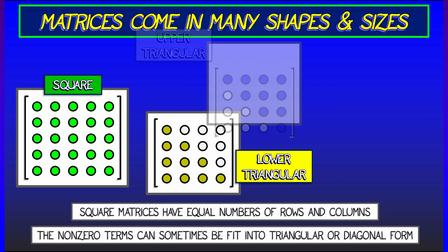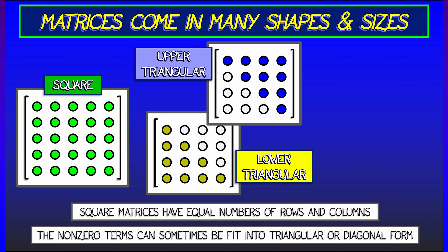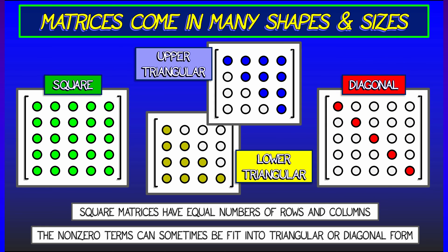An upper triangular matrix has zeros or vanishes below that diagonal. And a diagonal matrix is one that is both upper triangular and lower triangular. It's zero everywhere except along the diagonal.